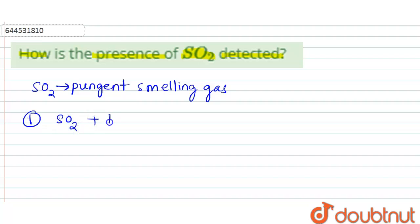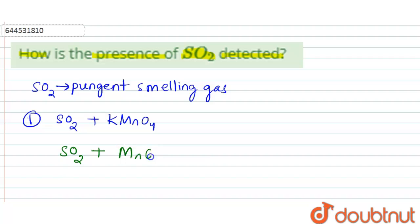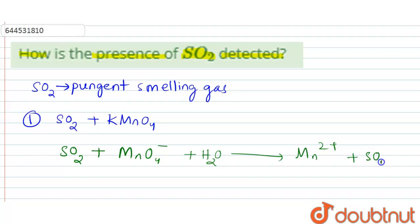We know sulfur dioxide is a reducing agent. So when sulfur dioxide reacts with potassium permanganate, it reduces MnO₄⁻ to Mn²⁺, and sulfur dioxide itself is oxidized to SO₄²⁻.